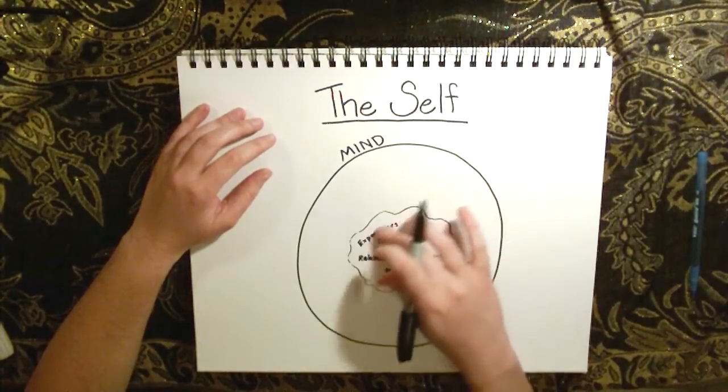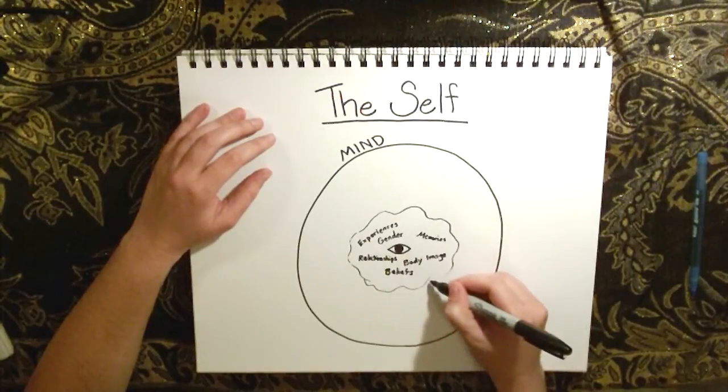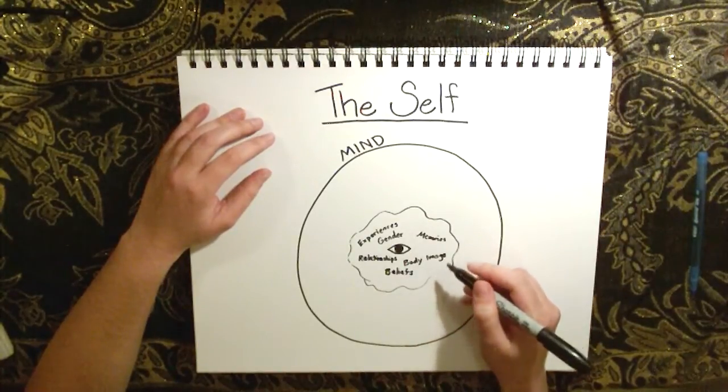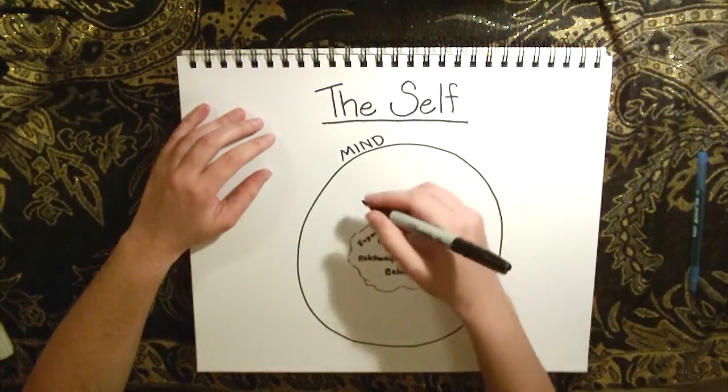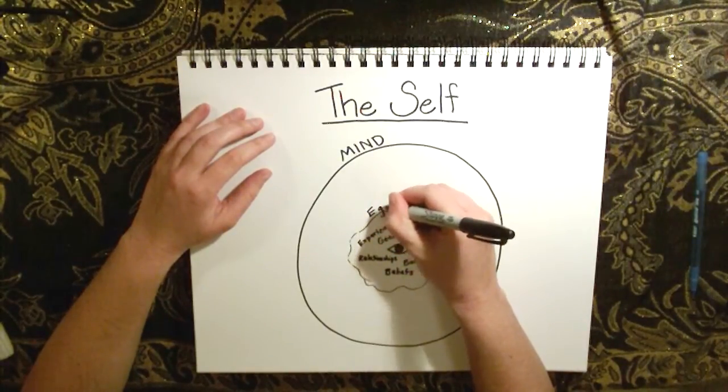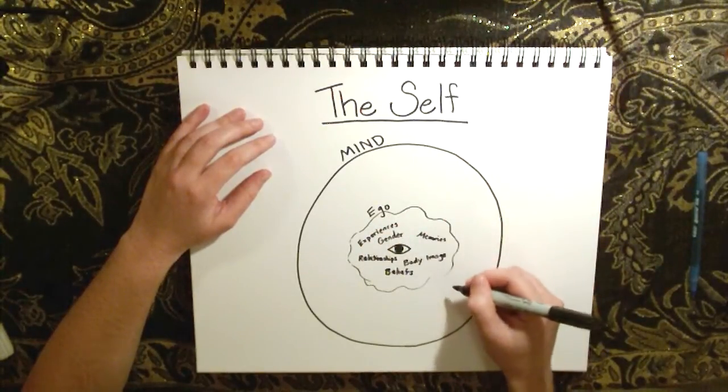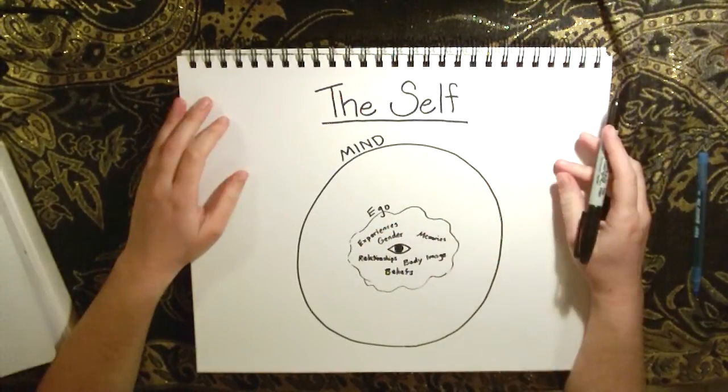Because it can't see this. Now this collection of constructs that's an illusion of self is called the ego.